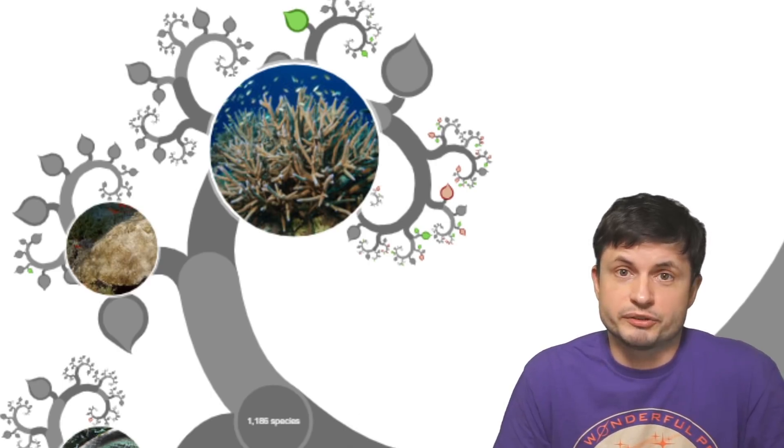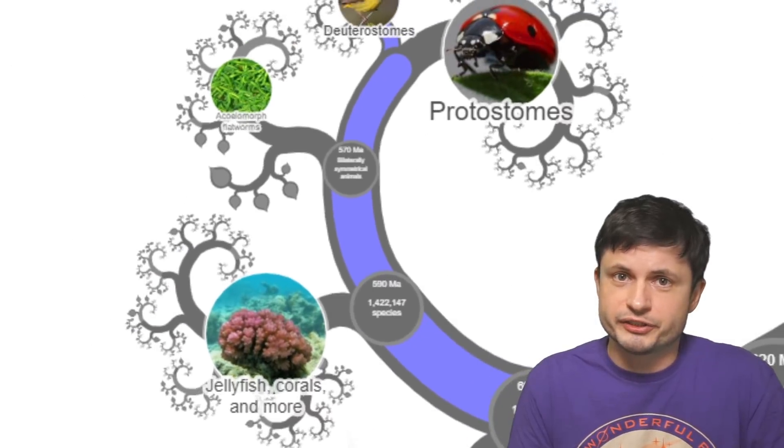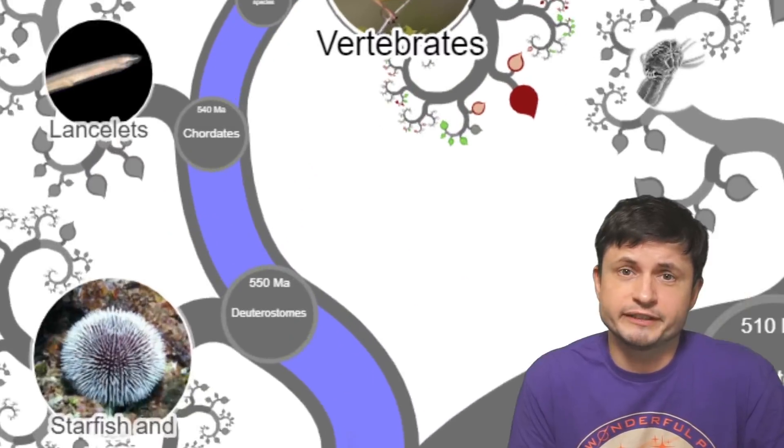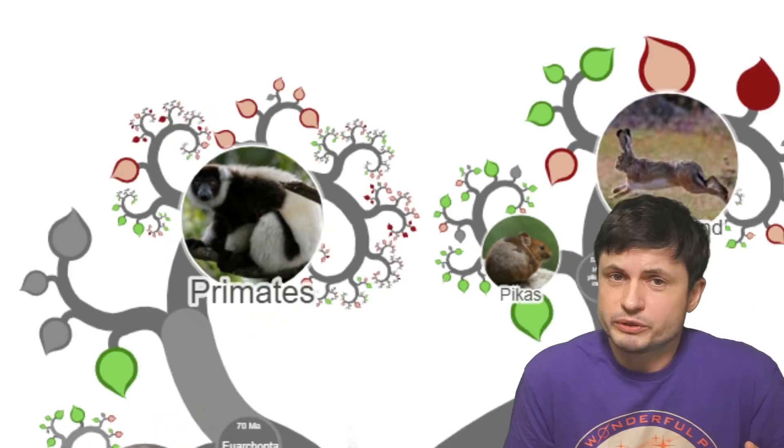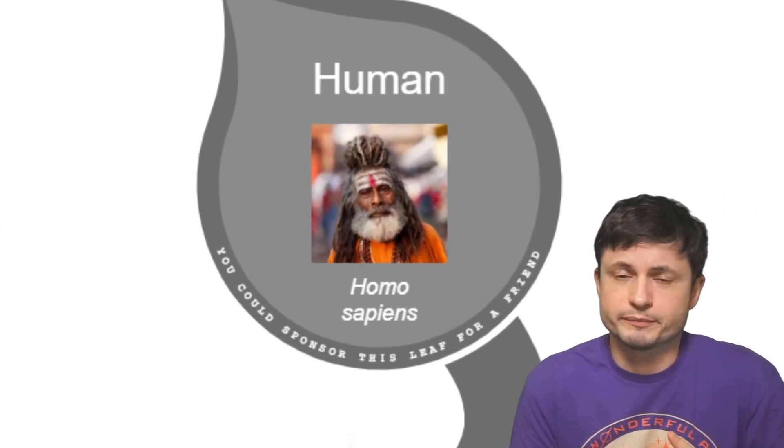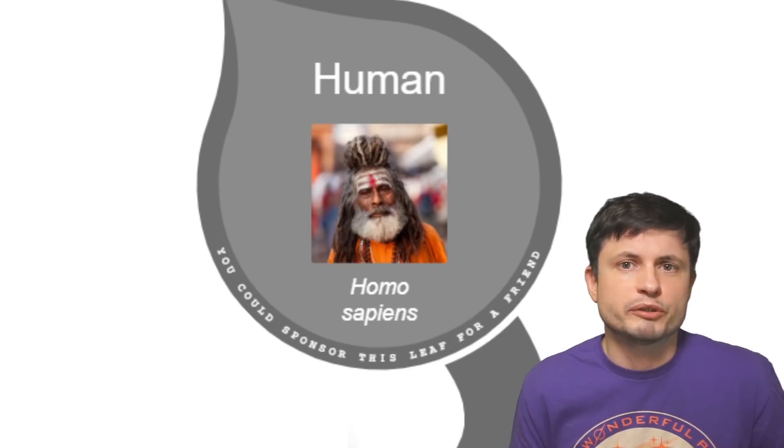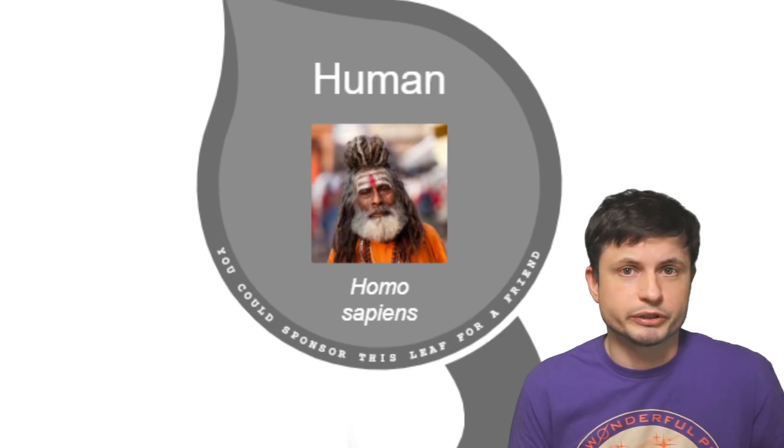And so if any of these branches and if any of these leaves start failing one by one, it's not really long before our leaf also starts shriveling to some extent as well. And it's a really important message, but it's a message that takes a little bit of time to reflect on in order to understand.